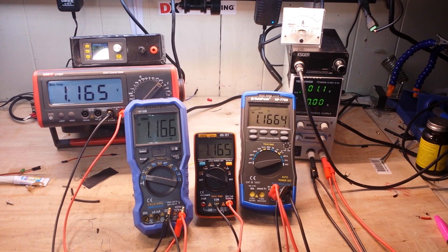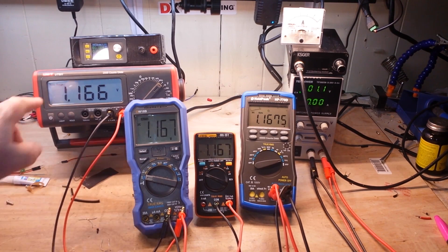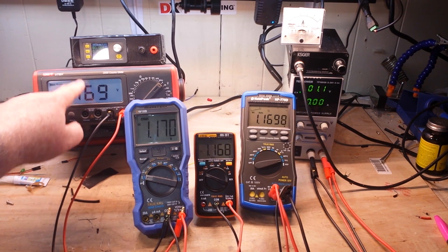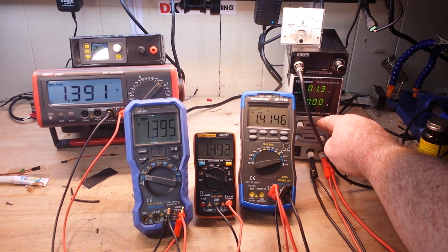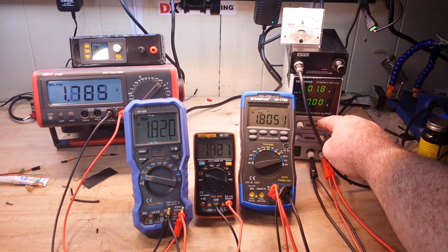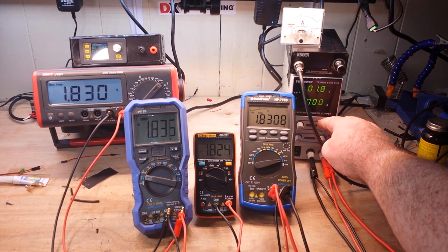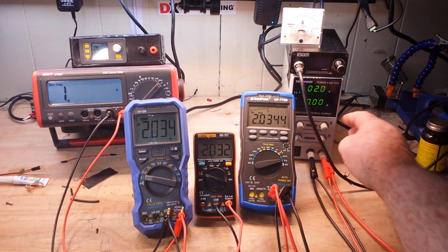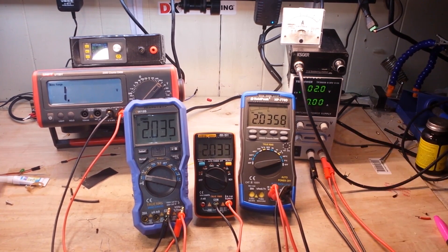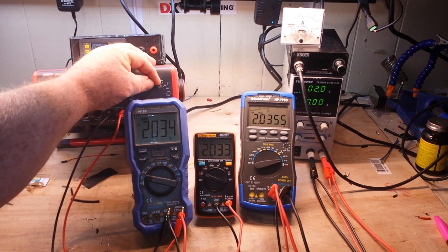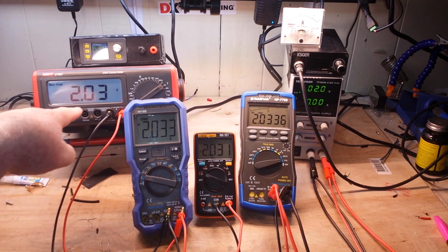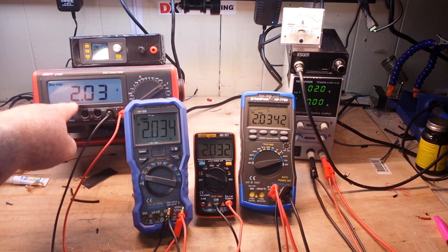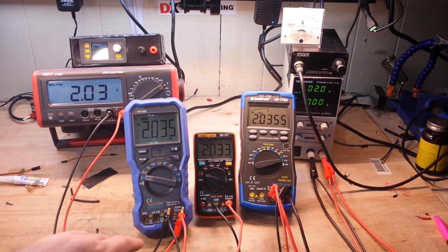That is my new meter. We will be talking about that later. But now keep an eye on this one. This is the 2,000 count meter as we pass two volts. Now we are right at two volts, now it says over range, I have to switch it. But you see we have lost the digit. It cannot display that digit.